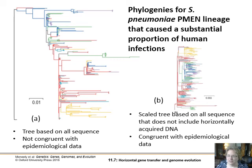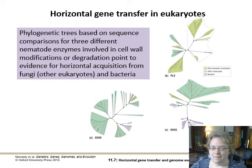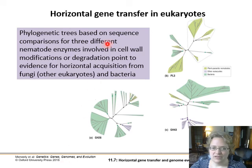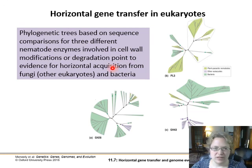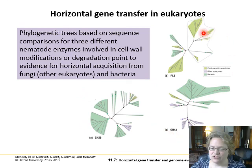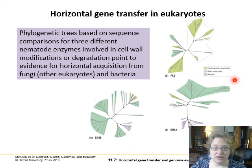We see this in eukaryotes as well, especially in genes that have had significant horizontal gene transfer events. For example, these are nematode enzymes involved in cell wall modification or degradation — nematodes that can suddenly bore through plant cell walls. Looking at three different enzymes, if you do a phylogeny based on each of those enzymes you get totally different phylogenetic trees for various nematode lineages, whether plant-parasitic nematodes, nematodes on other nematodes and eukaryotes, or nematodes that eat bacteria.